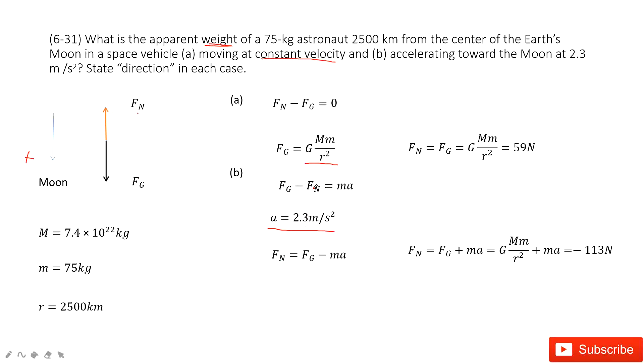We can convert this equation. The normal force is the gravitational force minus the mass times acceleration. We can input all the quantities and find it is negative 113 newtons. What does the negative sign mean? The negative sign means the direction for this normal force is outward from the moon. Thank you.